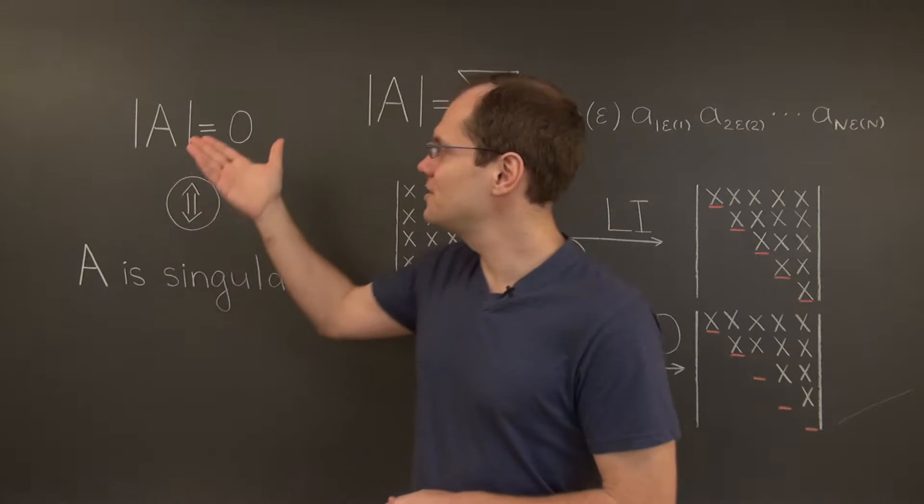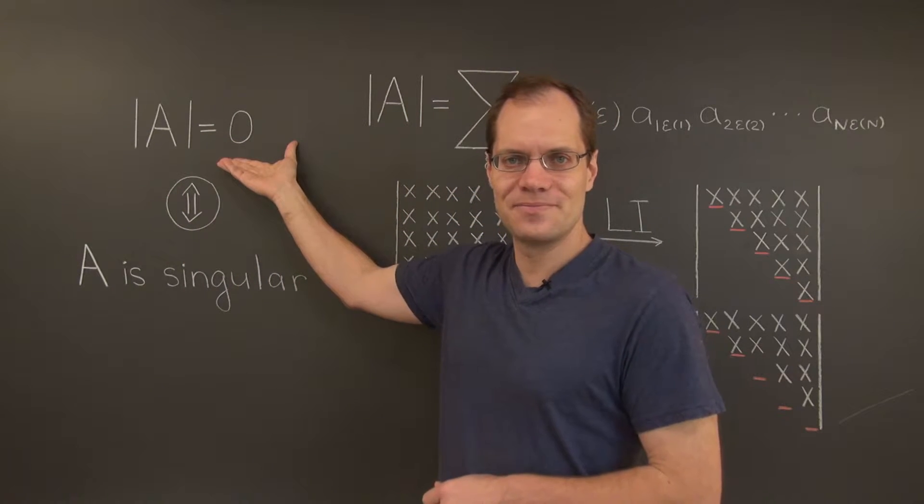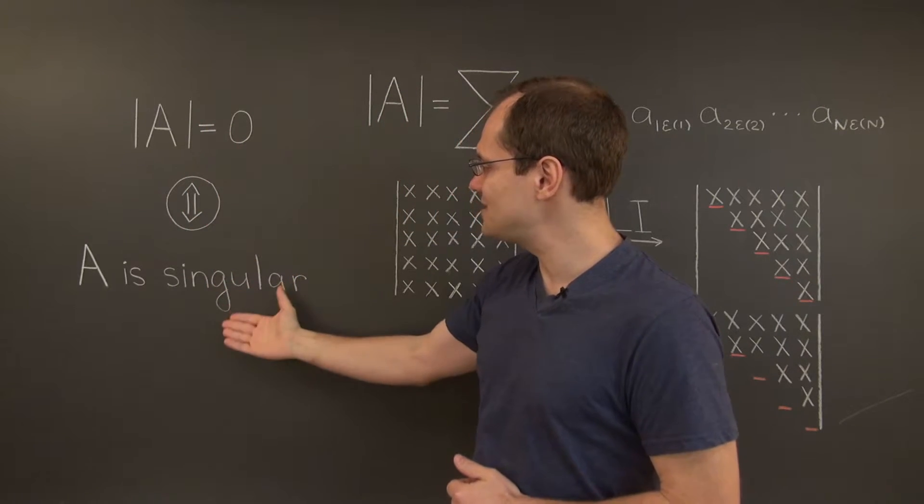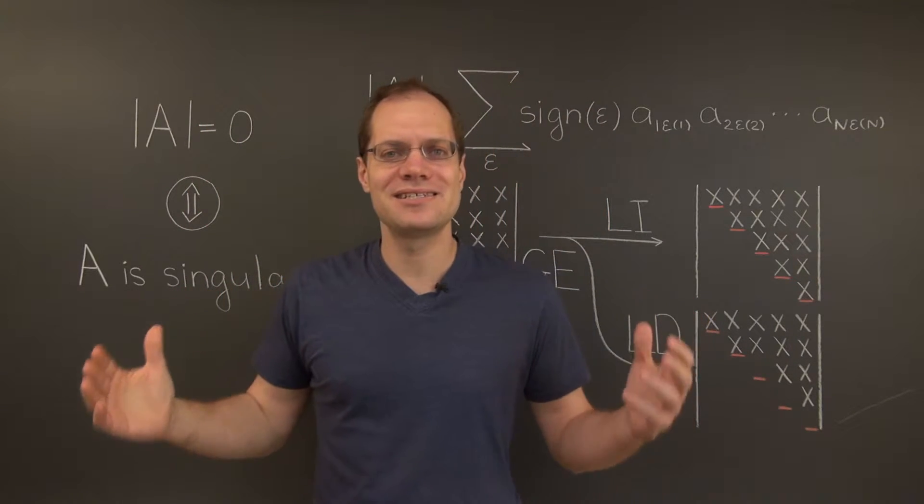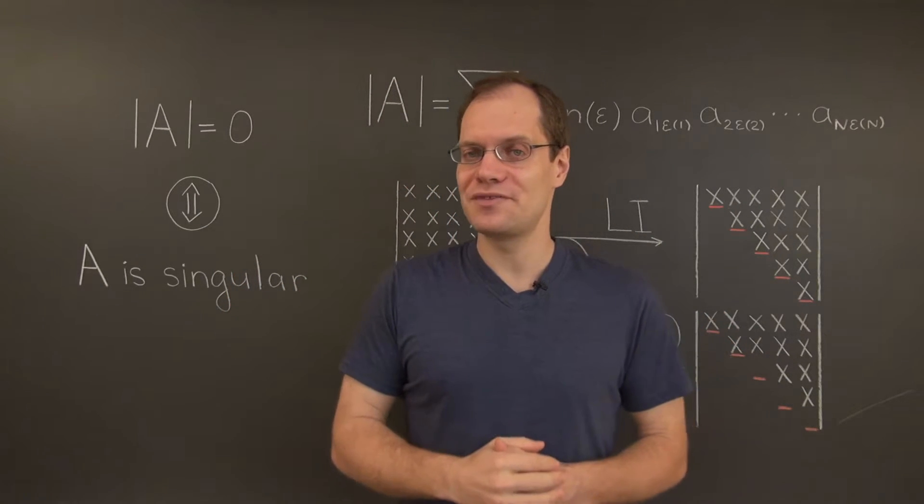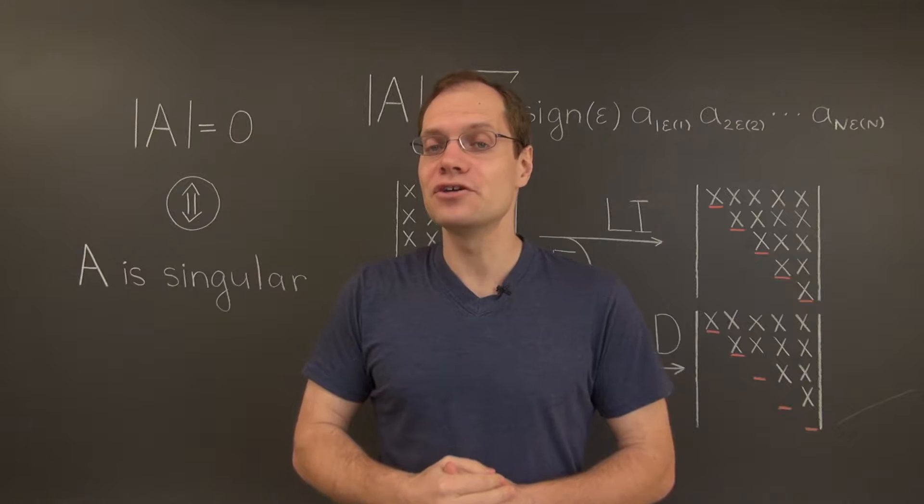And conversely, when the determinant is not zero, then the matrix is necessarily non-singular. So these two statements describe the exact same situation. And once we have both of these statements, we can reverse each one.